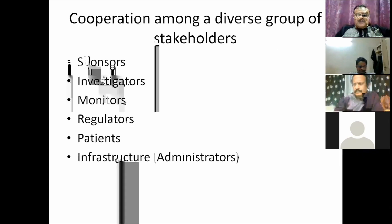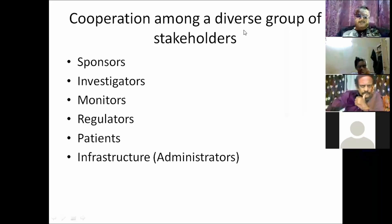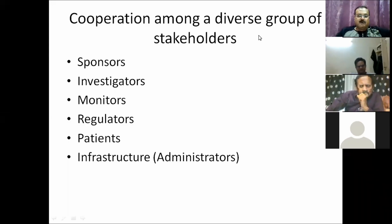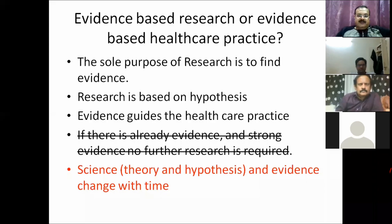In a clinical trial there are primarily six stakeholders: sponsors (mostly pharma companies funding the trial), investigators (those conducting the study), monitors (independent people between sponsors and investigators who ensure proper data collection), regulators (in India, the Drug Controller General of India — DCGI), patients, and administrators such as the university administration. There could be more, but these are the six main ones.